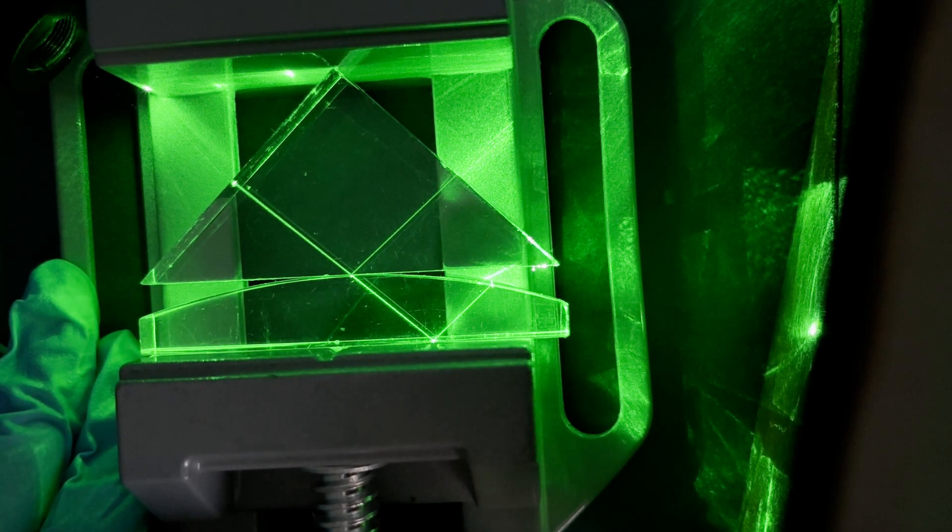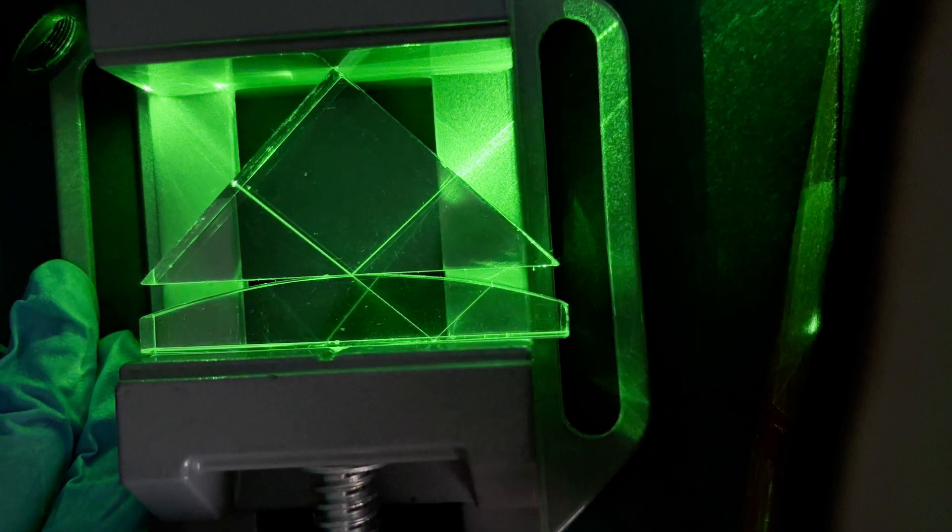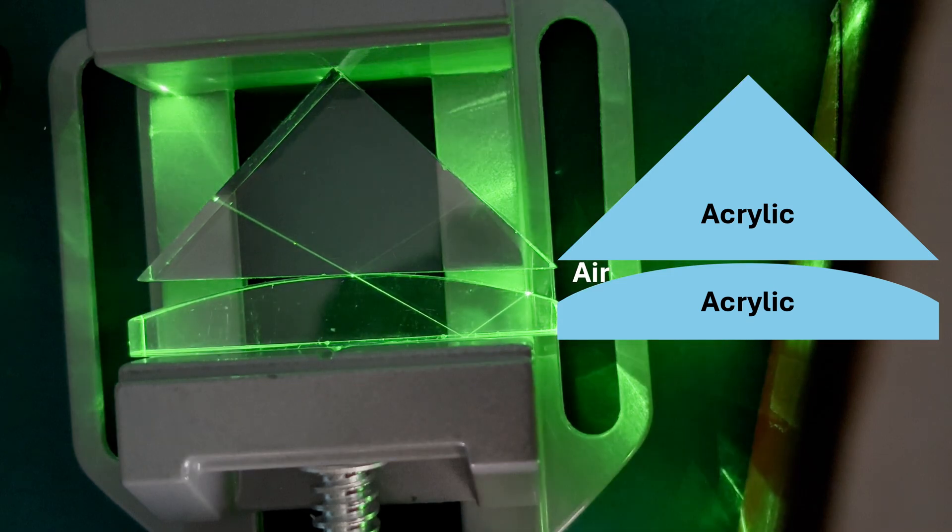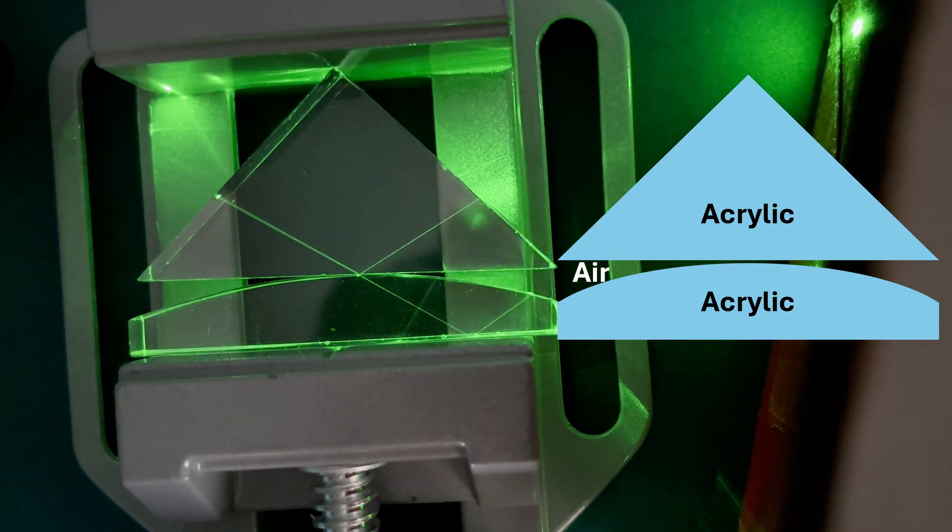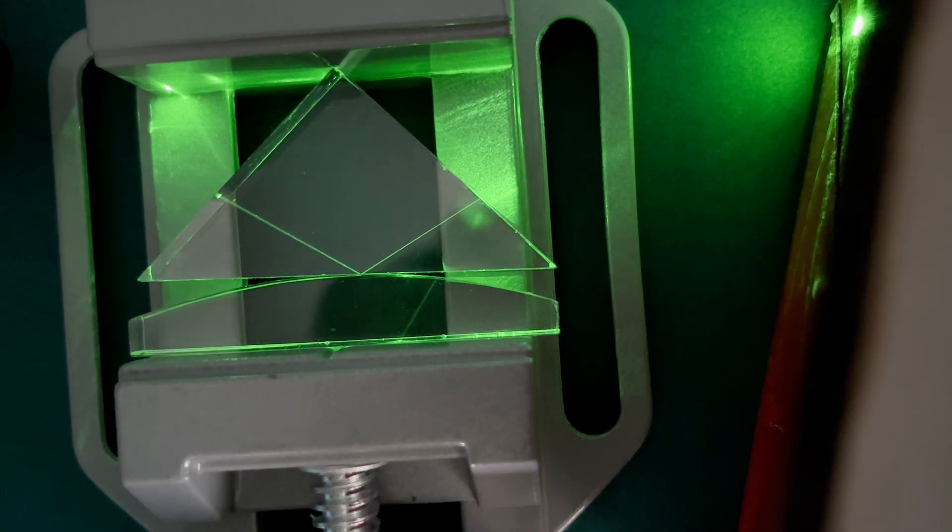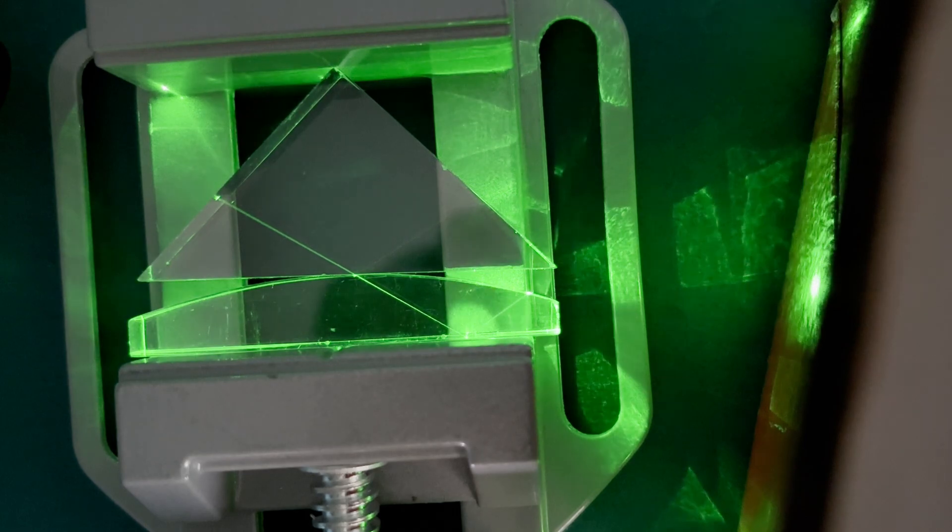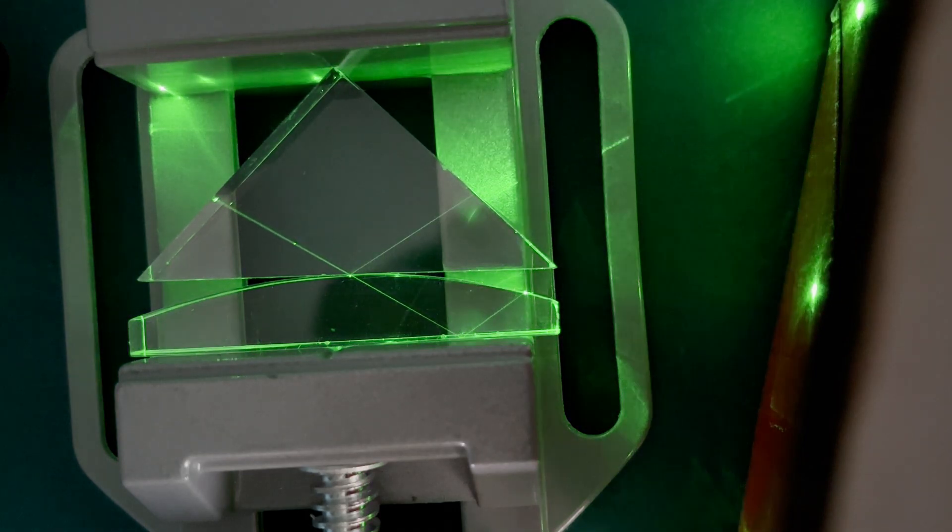The intensity of this transmitted beam changes depending on the gap's width. By holding the media squeezed together and scanning the interface with the laser, we can see that the transmitted light gets weaker as the width of the air gap increases.